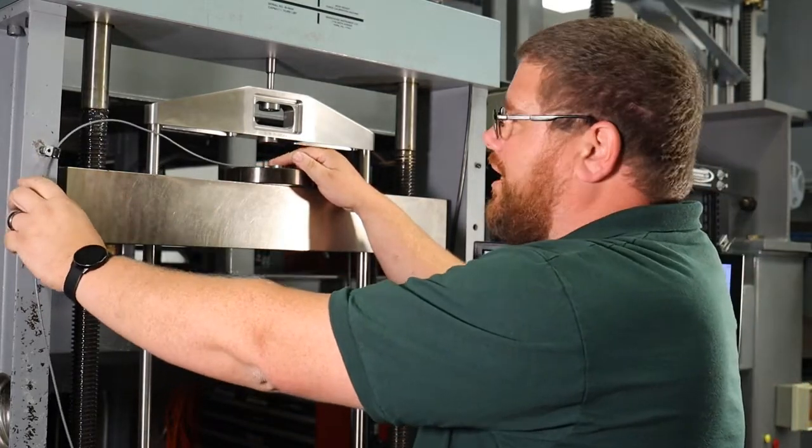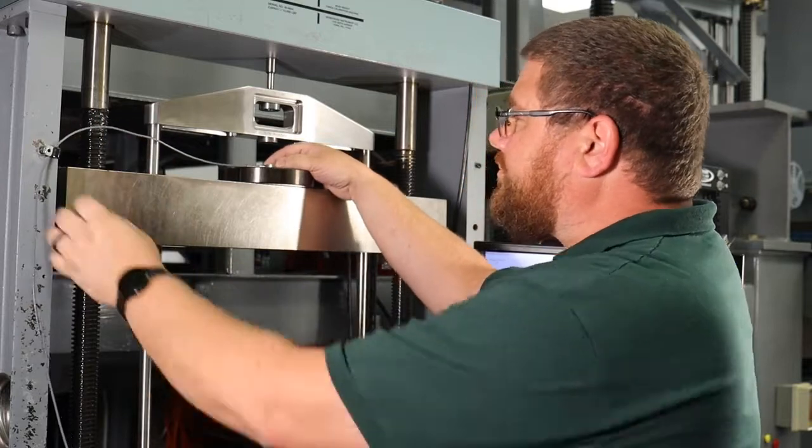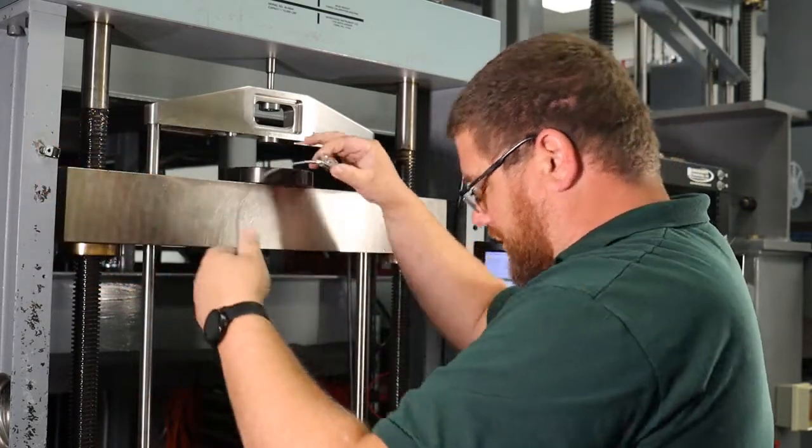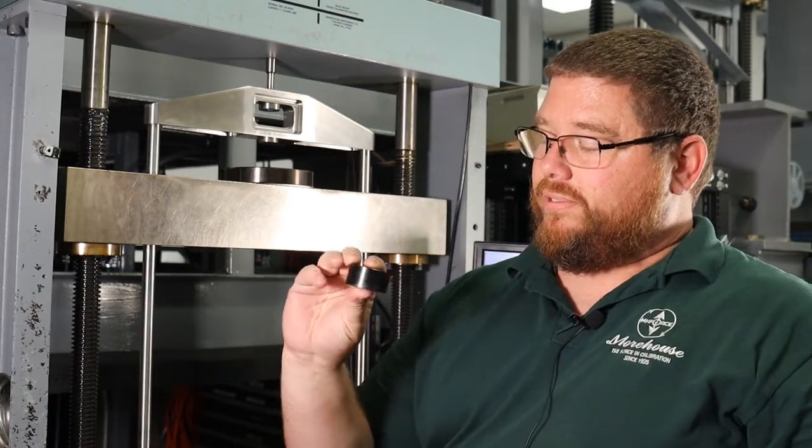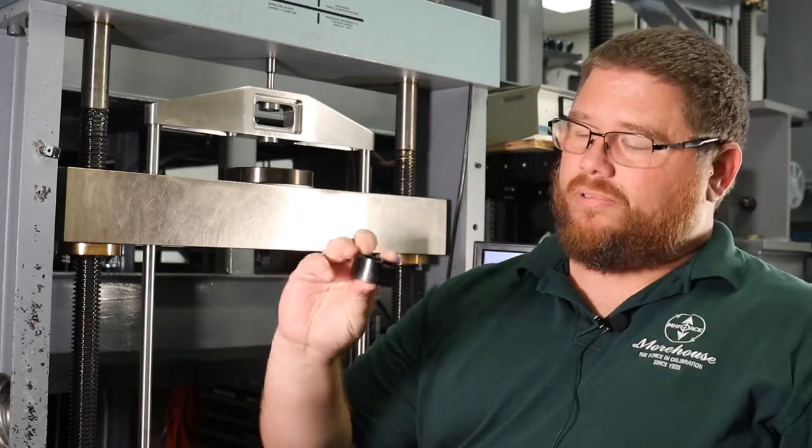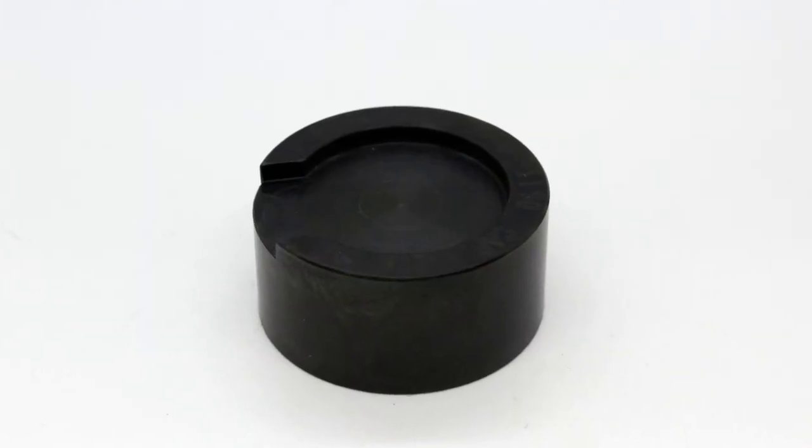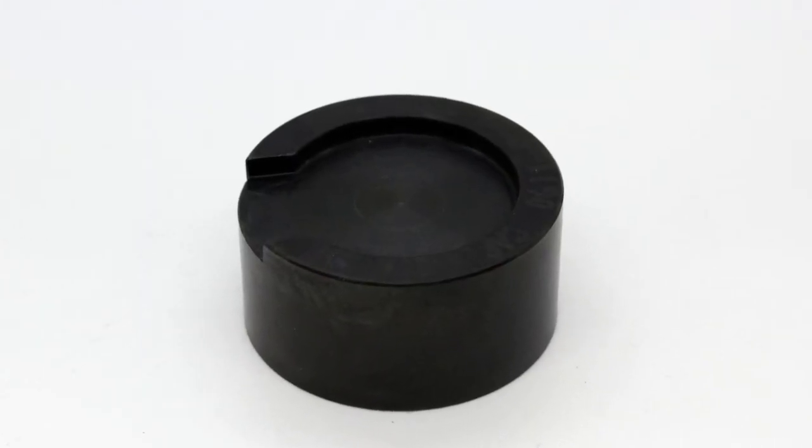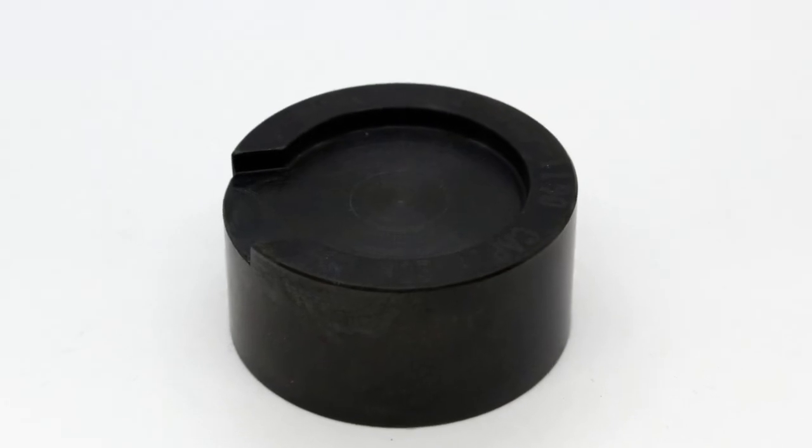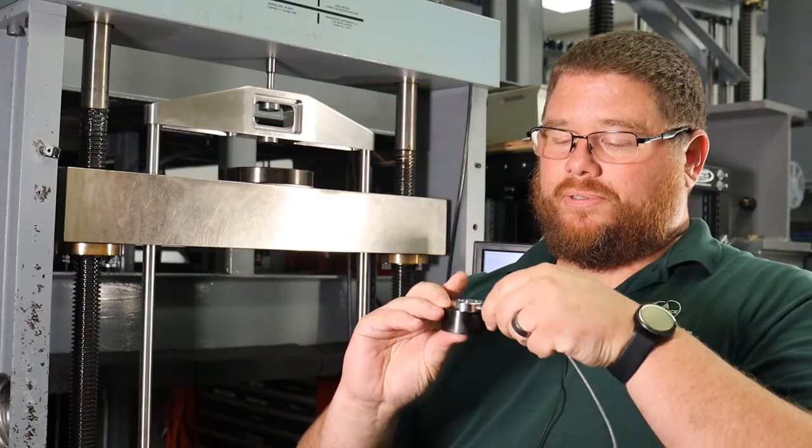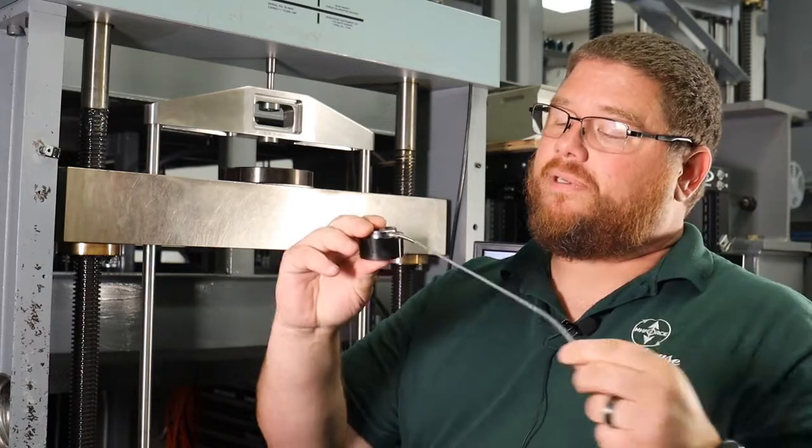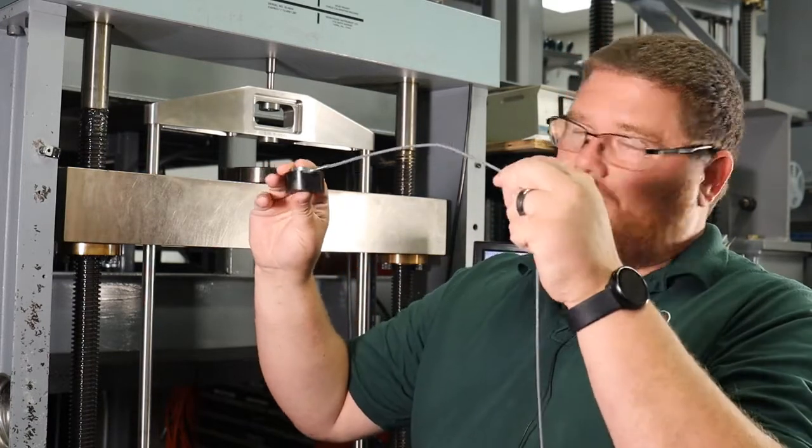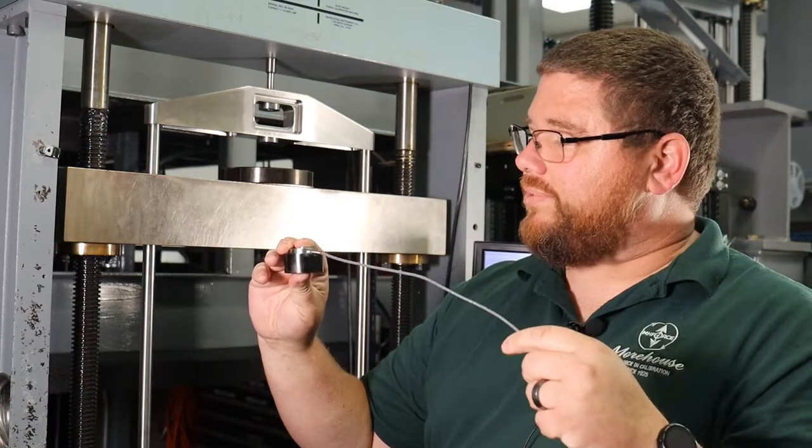You can hang the cable, which will help, but what works best for us is a base adapter that's cut out to the diameter of the specific button load cell you're calibrating. It has a notch cut into it for the cable to pass through, so it sits right in there, fits nice and snug, keeps it from moving around, and the cable clears - it doesn't hit on anything, so it stays out of the way.